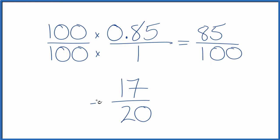So we can reduce the fraction 85 over 100 down to 17 over 20. And these are all equivalent. If you divide 17 by 20 or 85 by 100, you'll end up with the decimal 0.85.